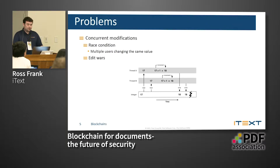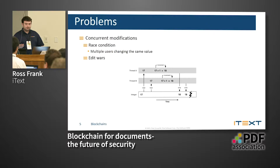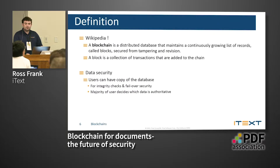Another issue is race conditions. If you have multiple users editing the same value in multiple threads, they can theoretically write back the same value when they're not supposed to. For example, if you're just incrementing a number — thread A increments it to 18, thread B does the same thing — now in the database you've written back 18 twice when the second one really should be 19. There's no validation there.